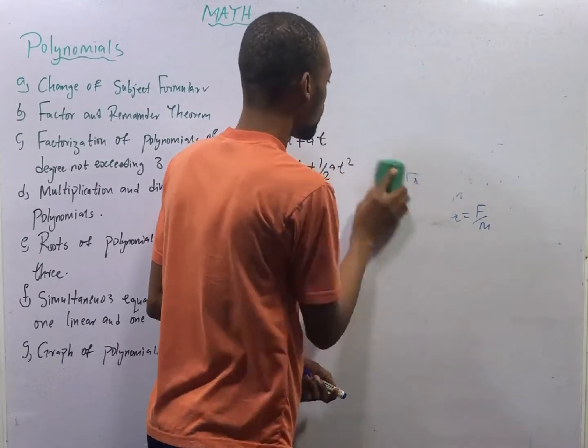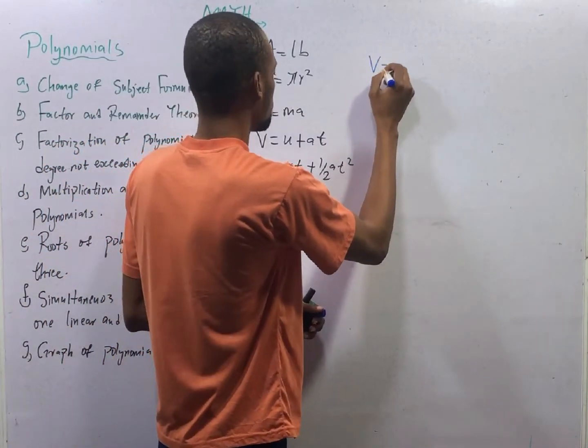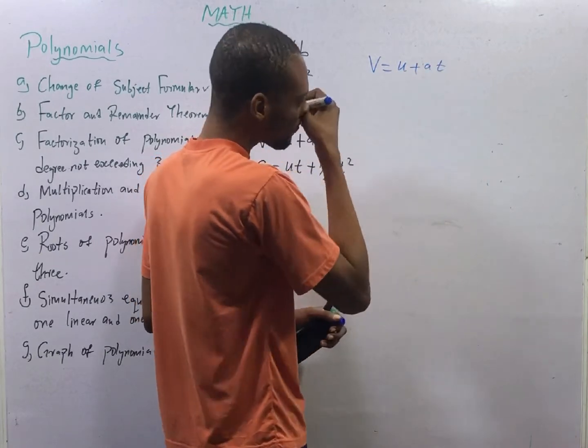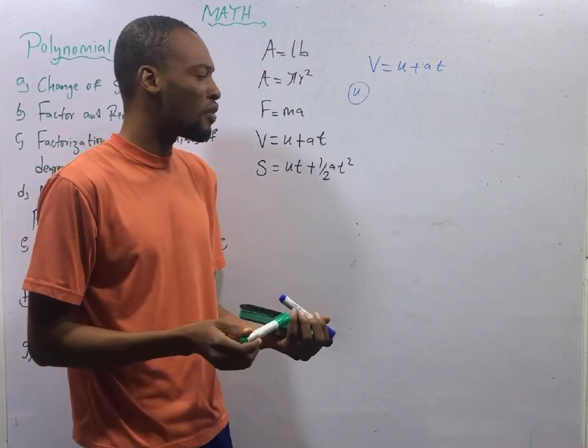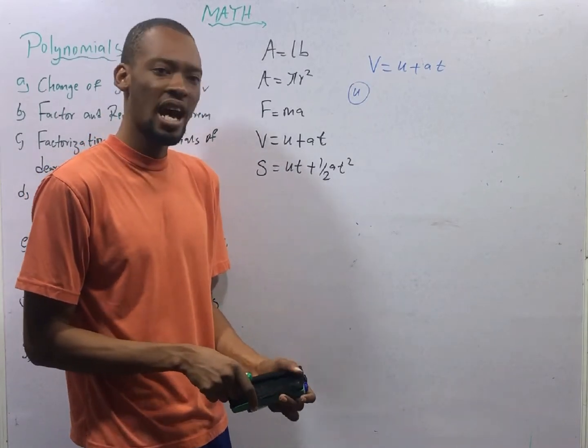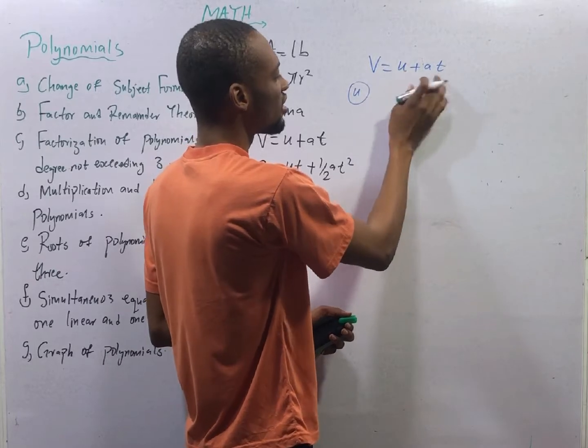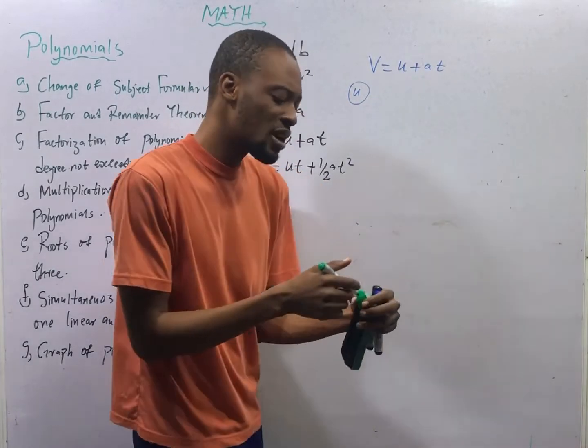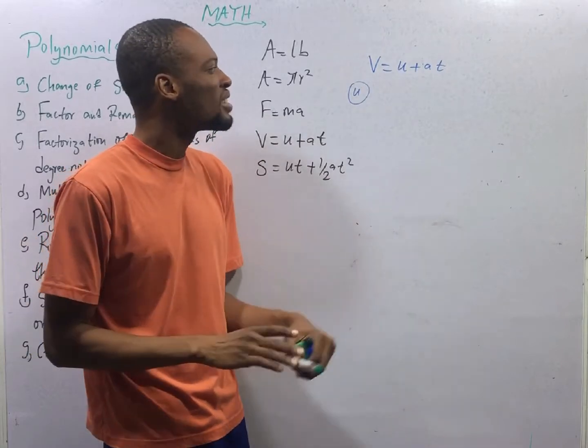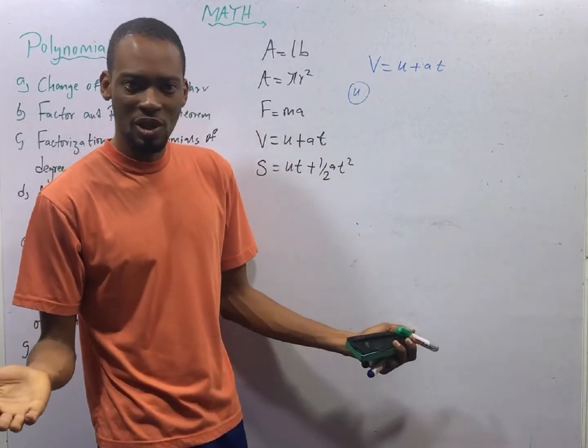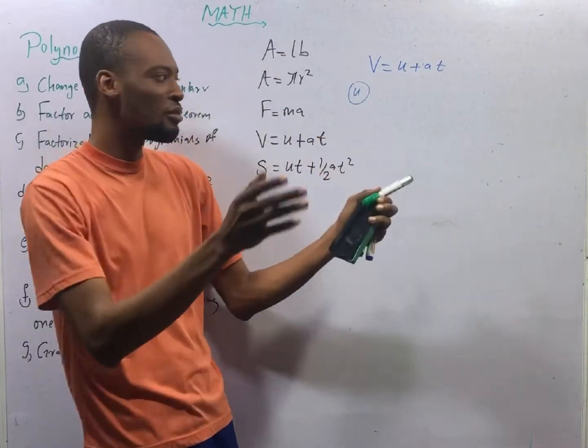Let's look at the next one. The next one is longer with combined values on both sides. If you have V equals U plus AT, let's try to make U subject formula. If we are making U subject formula, we do everything possible to take every other thing outside of U so that only U remains. What is separating here and here? Plus. And I said that anytime plus is separating two variables, what should come to your mind is collecting like terms. And like terms in this case simply mean anything that is known to you. Because U is what you are looking for. So anything that is known to you is against you. So you take it to the other side.